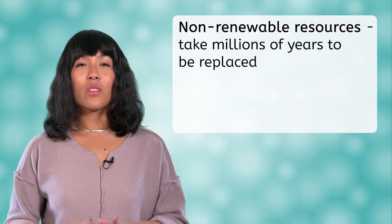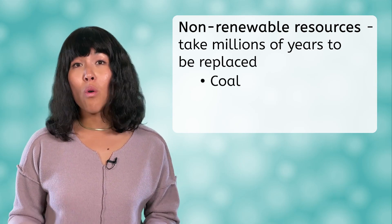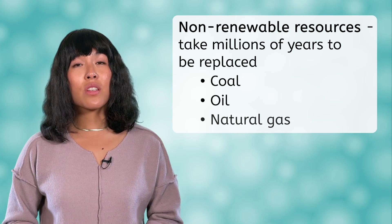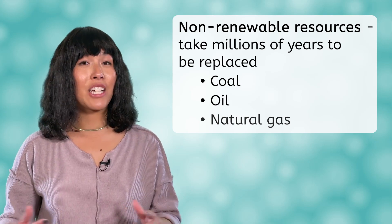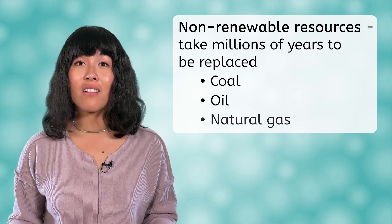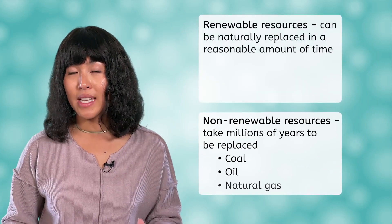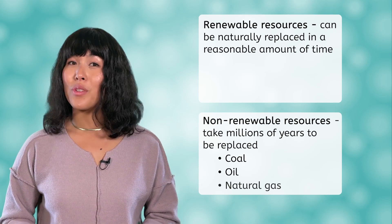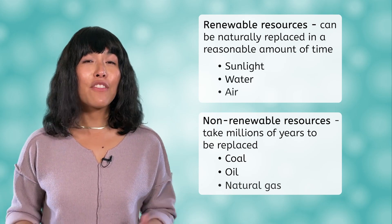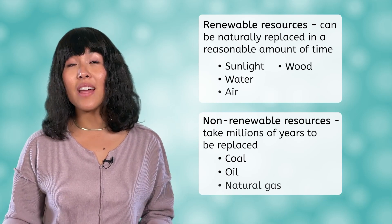This is because some resources take a very long time to form — we're talking millions of years. These resources are called non-renewable resources and include things like coal, oil, and natural gas. These resources are also called fossil fuels and are often used to produce electricity and fuel to power homes, cars, and factories. Resources that can be naturally replaced in a short amount of time are called renewable resources. These usually include sunlight, water, air, and even most resources that come from living things, like wood and food.